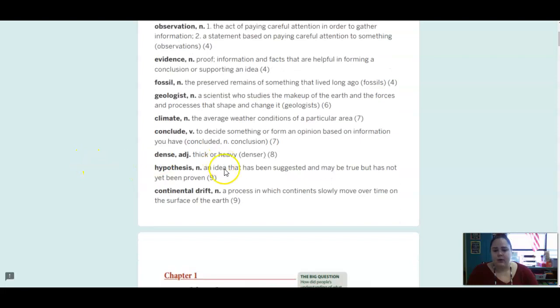Hypothesis is a noun, and we know what this is from science, but it's an idea that might not be true yet. So it's a guess, it's an idea, but it was not proven true yet. And then continental drift is a process in which the continents slowly move over time on the surface of the earth.